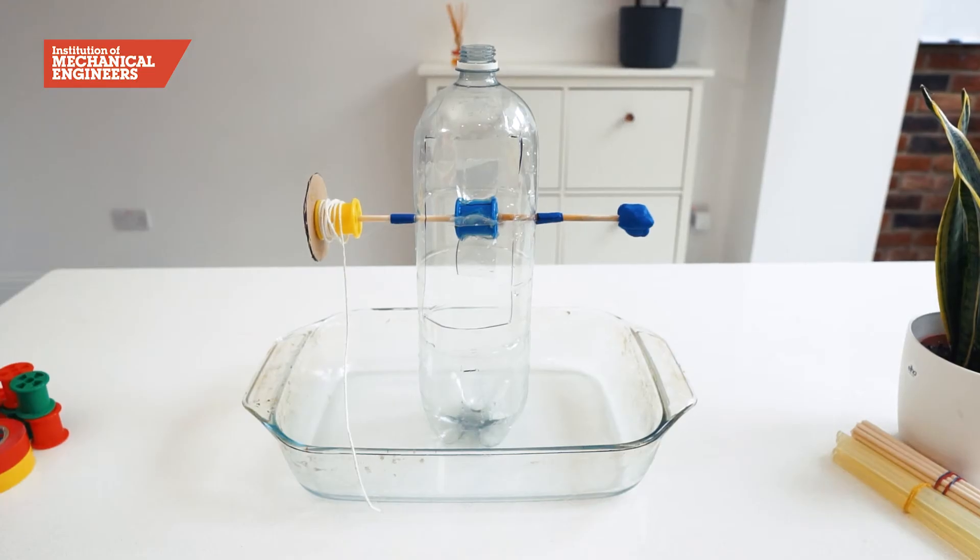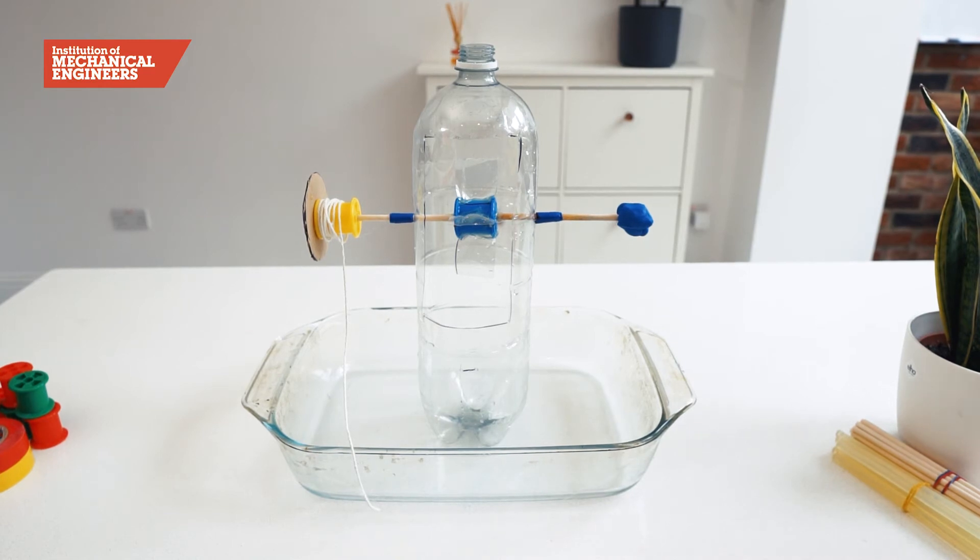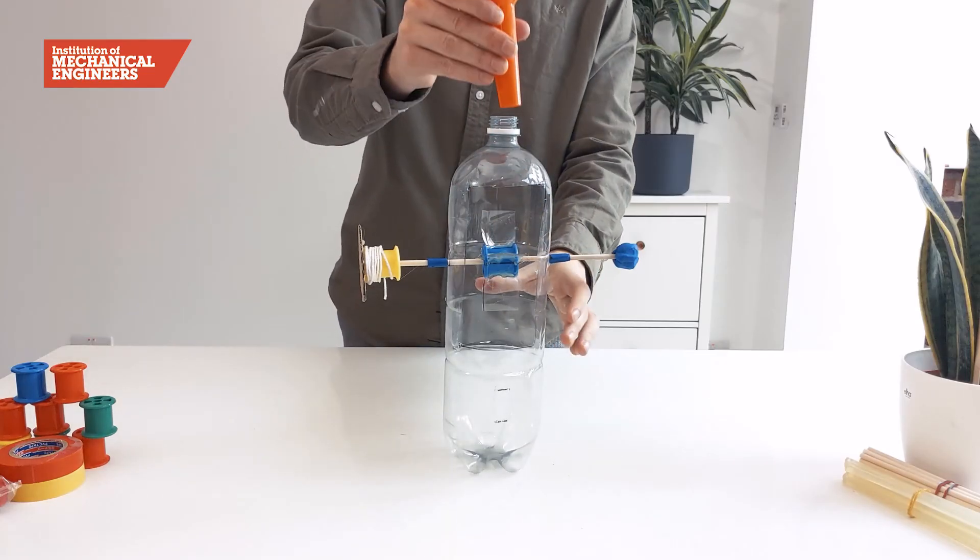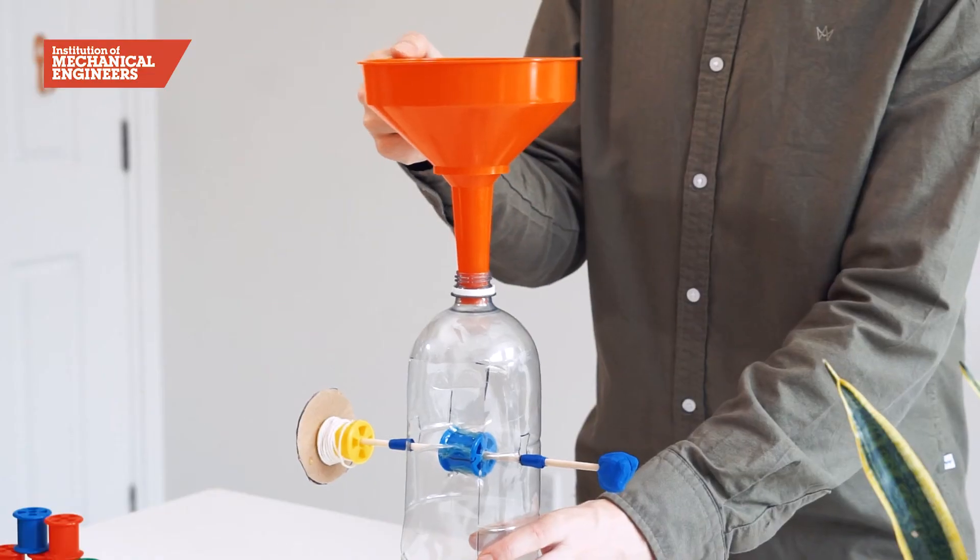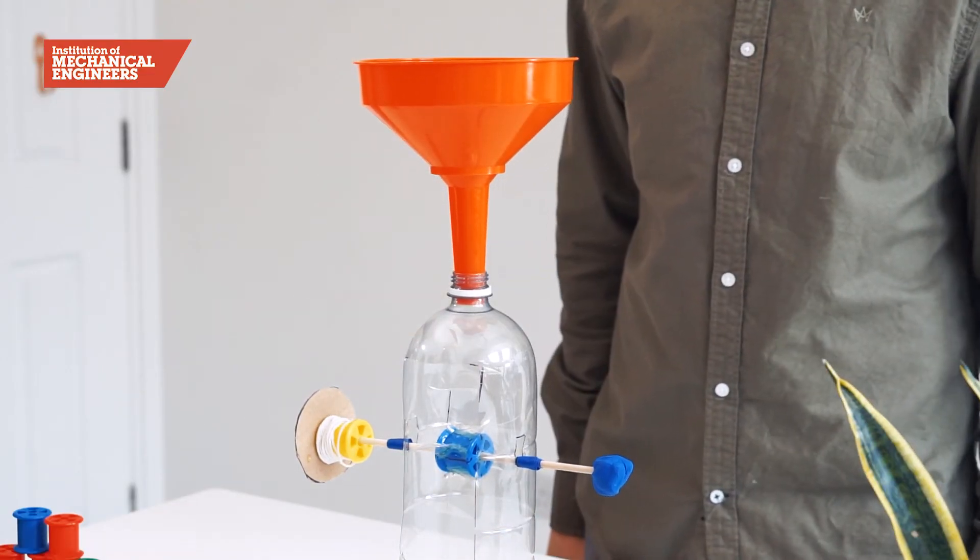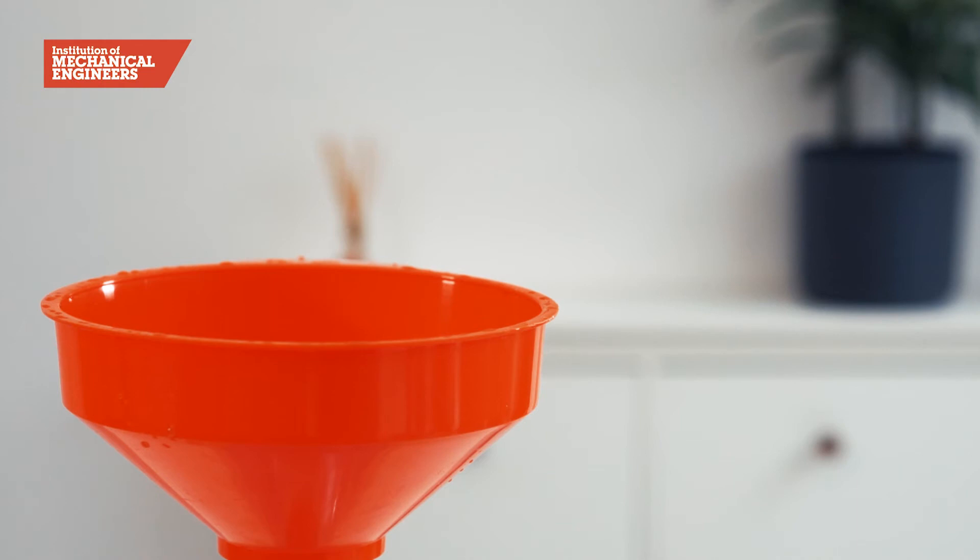Place the model into a tray so that any flowing water from the lowest hole is collected. Place a funnel in the neck of the bottle and secure with modelling clay. Finally, hold your jug of water above the model.